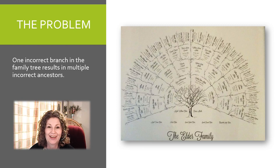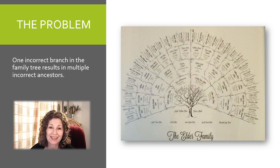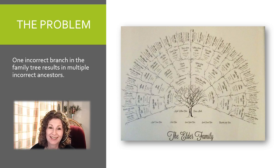Let's talk about the problem. One incorrect branch in the family tree can result in multiple incorrect ancestors. Our family trees are only as good as each generational link. Without good research we may have entire branches of our family tree that need pruning out and then new correct branches grafted in.